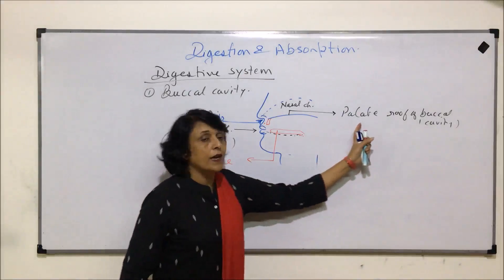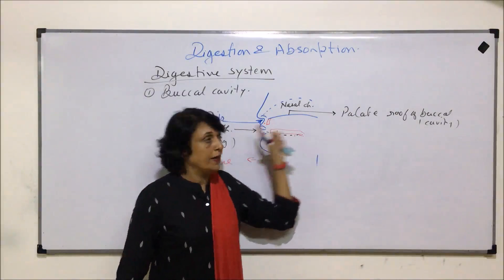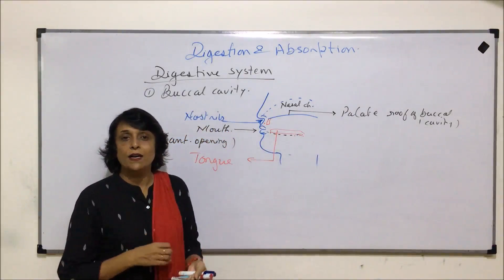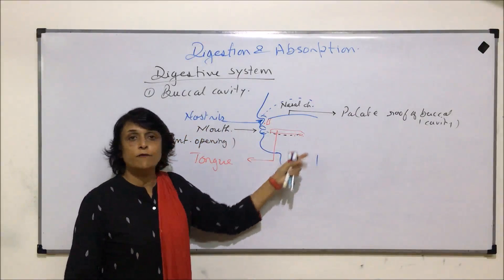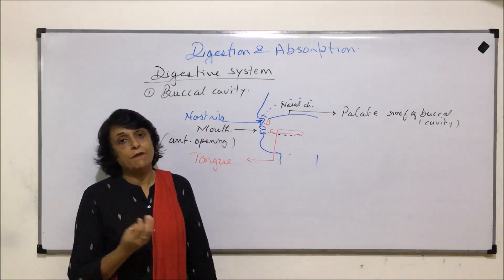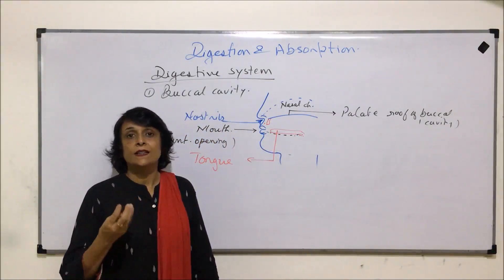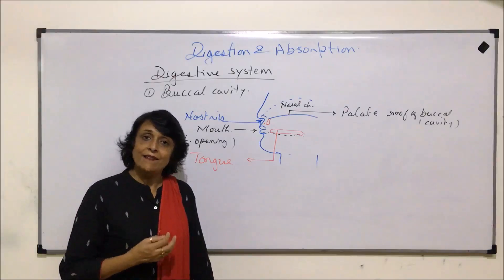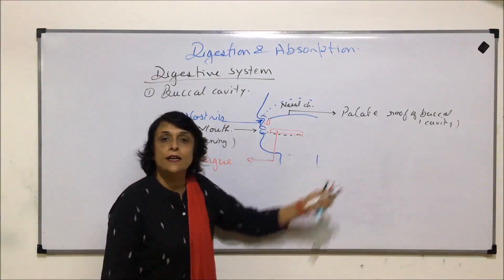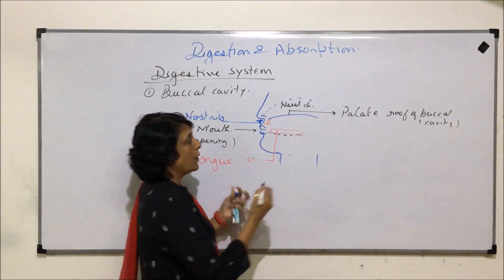Now we are talking about the palate. In the buccal cavity we have to discuss the palate, then teeth, tongue, and various salivary glands. We are starting with the palate, which makes the roof of the buccal cavity.